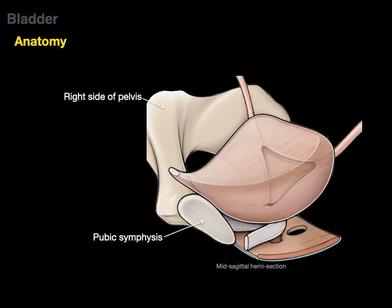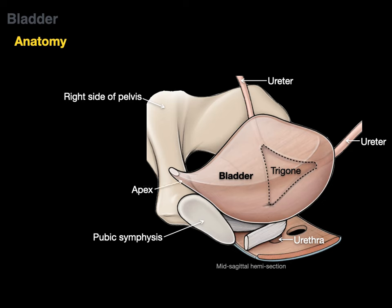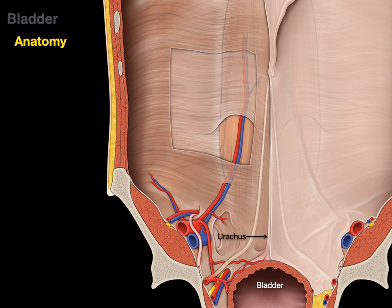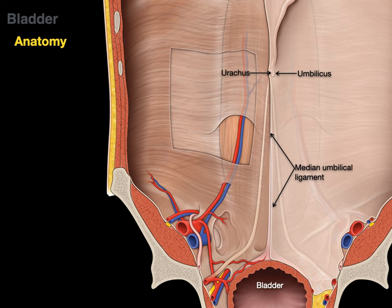In this midsagittal hemisection, the two ureters dump into the bladder and at the neck the urethra begins. The three openings — two ureteric orifices and the urethral opening — form the trigone, which has increased sensitivity to stretching as the bladder fills with urine, giving the sensation that you need to go to the bathroom. The apex of the bladder becomes the obliterated urachus, which runs up to the umbilicus. In the adult it is covered by peritoneum and called the median umbilical ligament.